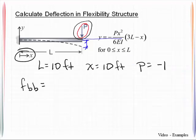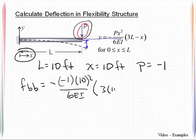We get FBB is equal to a negative, negative 1 times 10 squared over 6EI, 3 times 10 minus 10. That computes out to be a positive 1,000 over 3EI. That is a positive value.